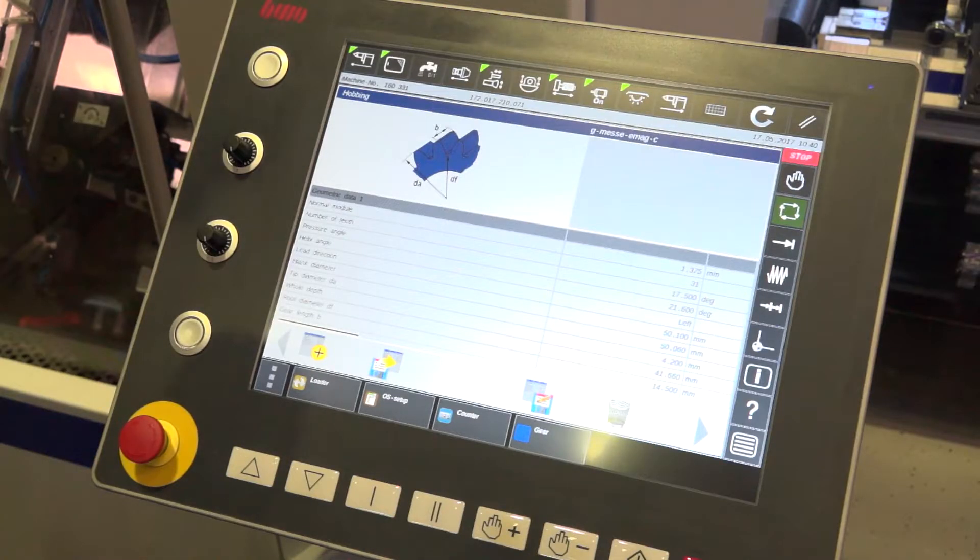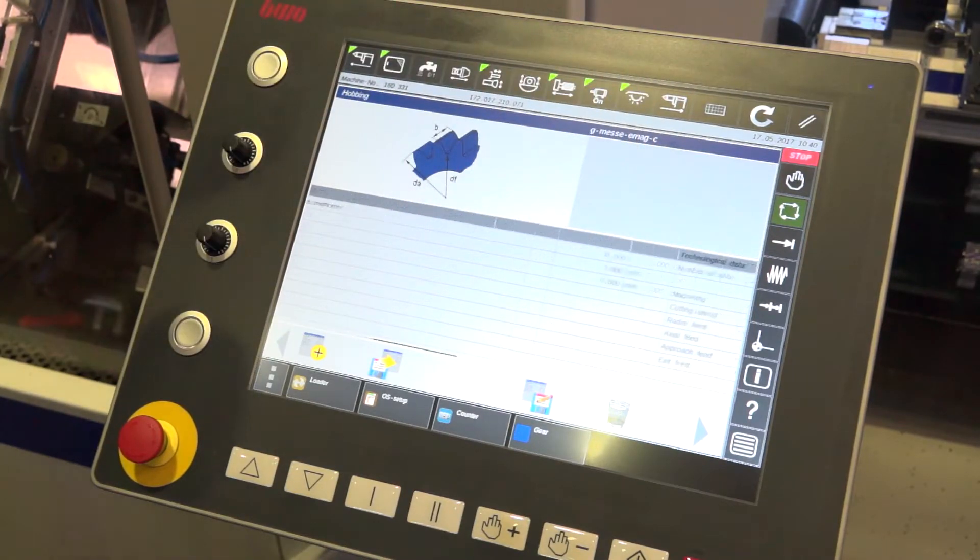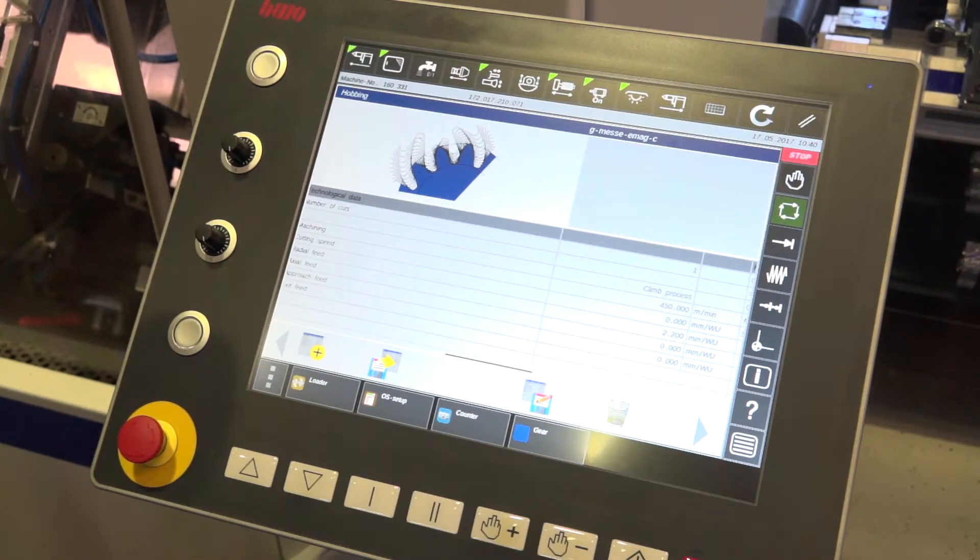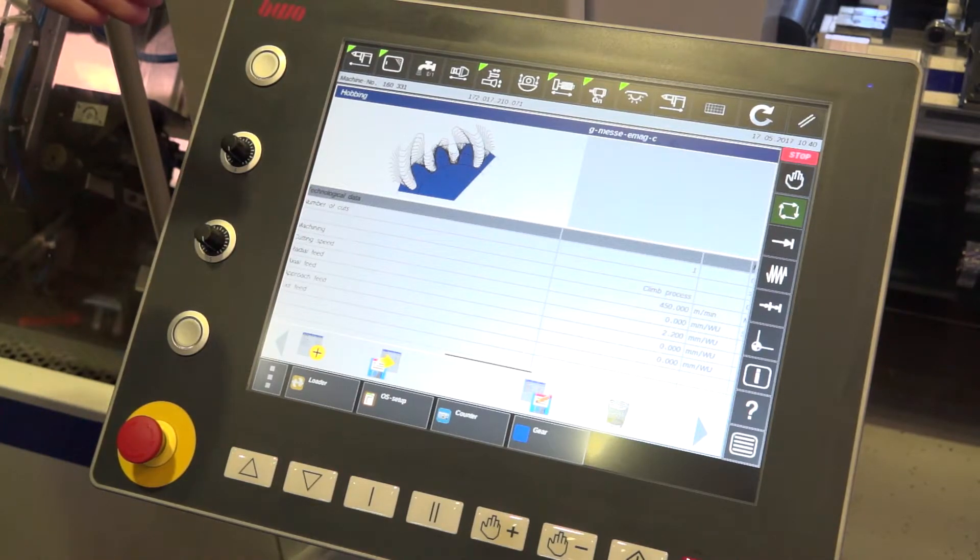And how about the control? Is that also easy and quick to program? I think it's worth taking a look at it. You can see we have a huge touch screen, and you can even swipe the pages like with the iPhone. We have developed KERB4Dialog software that makes it very simple to program this gear hobbing machine. So the machine will ask you everything that it needs in order to create the NC code automatically.